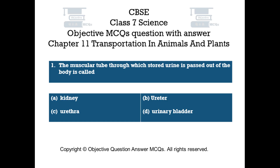Question number 1. The muscular tube through which stored urine is passed out of the body is called. Option A: Kidney. Option B: Ureter. Option C: Urethra. Option D: Urinary Bladder.